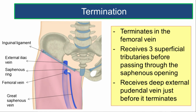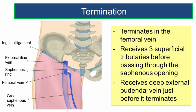The great saphenous vein terminates by passing through the saphenous opening, piercing the cribriform fascia, and draining into the femoral vein. It receives three superficial tributaries just before passing through the saphenous opening, and once through, it receives the deep external pudendal vein just before opening into the femoral vein.